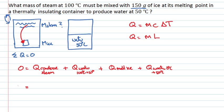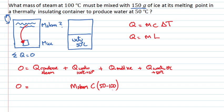Let's look at the heat associated with the change in temperature. For the steam condensate, the water changes from 100 degrees Celsius to 50 degrees Celsius. The amount of water is the same as the mass of the steam, multiplied by the specific heat of water and the change in temperature: T final minus T initial, which is 50 minus 100 — a negative number. That makes sense because the sum of heats must be zero.